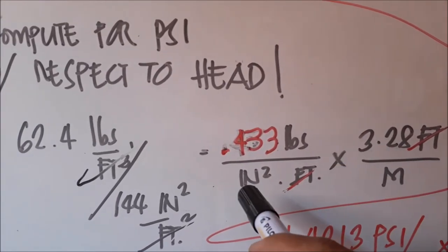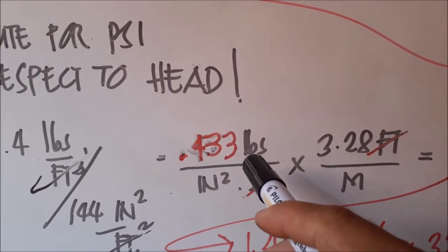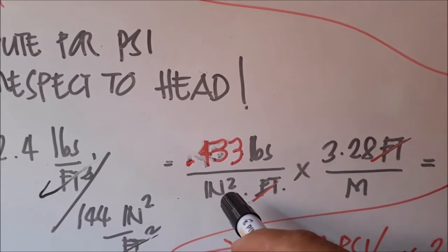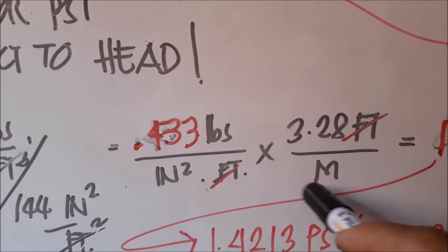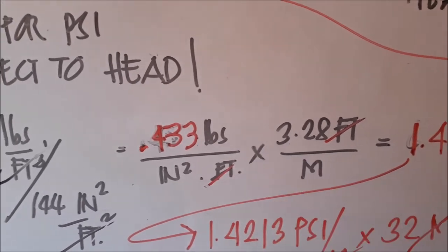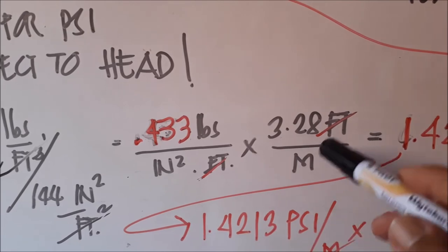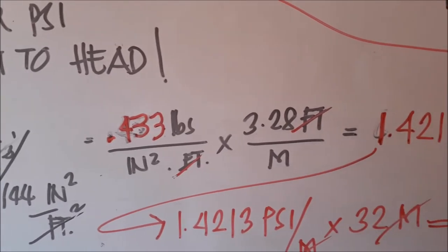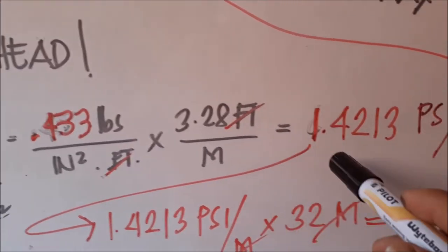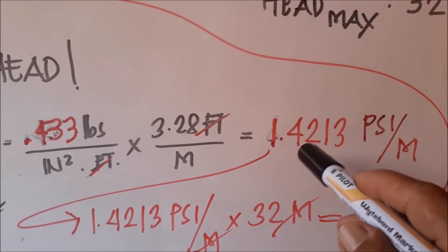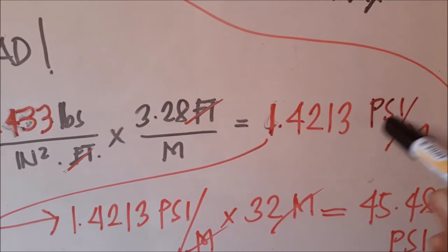When we combine this, pounds over square inch, that is PSI. Now this foot - how many pounds per square inch per foot? Let's convert it to pounds per square inch per meter. Multiply it by 3.28 feet per meter. Cancel the feet, leaving meter. Our result is 0.433 times 3.28, which gives us 1.4213 PSI per meter.